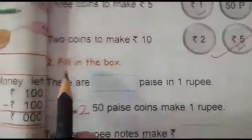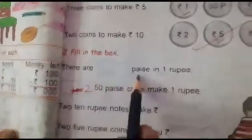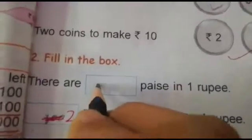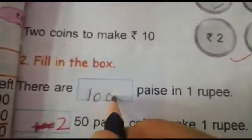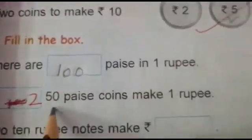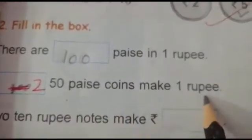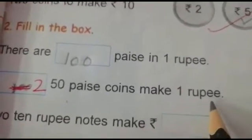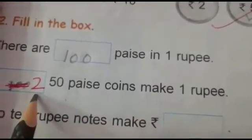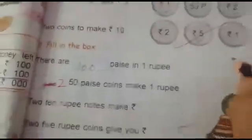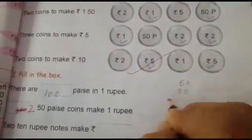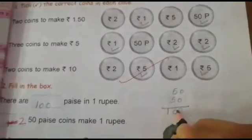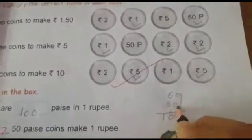Next one, fill in the box. There are how many paise in 1 rupee? 100 paise. How many 50 paise coins do we need to make rupee 1? We need 2 coins.